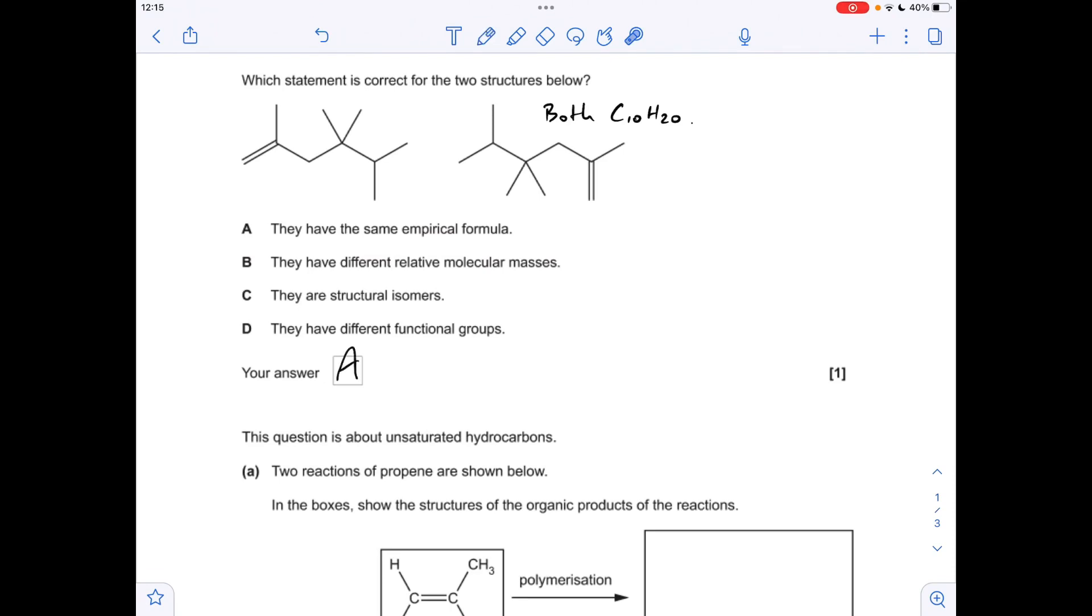So just for revision purposes we'll rule the other three out. Different relative molecular masses? No, because they've both got the same molecular formula. They are structural isomers? No they're not, they're just flipped around. And they've got different functional groups? No they haven't, they've both got the alkene functional group. So A was the answer.